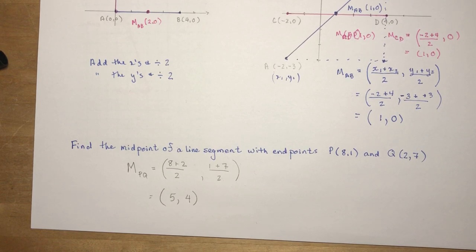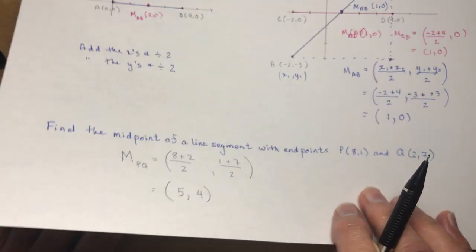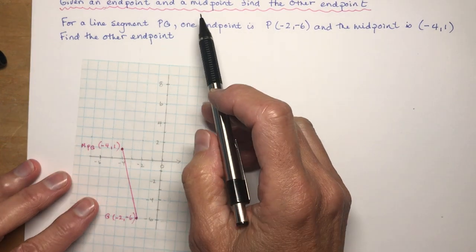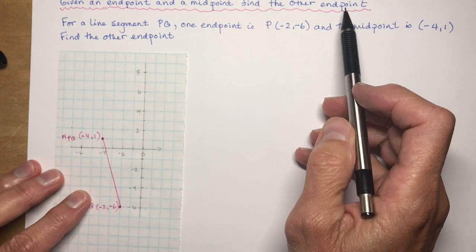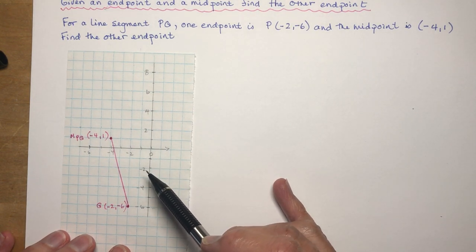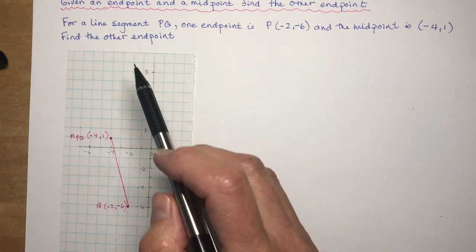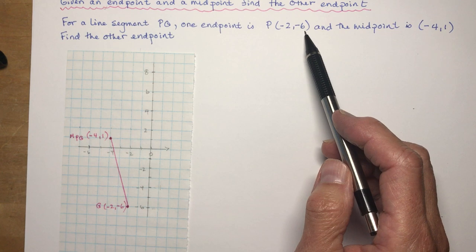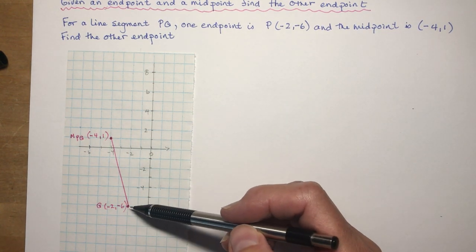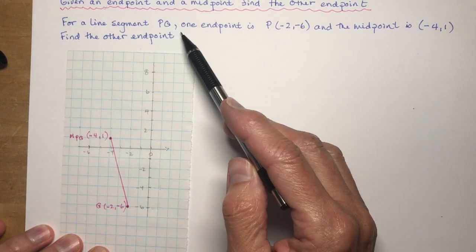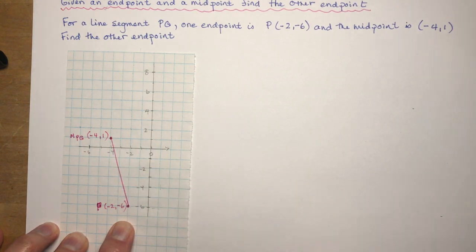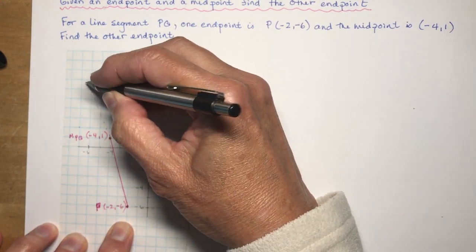Another question you'll be asked is: given the midpoint and one endpoint, find the other endpoint. For line segment PQ, one endpoint is P(−2, −6) and the midpoint is (−4, 1). I always suggest students sketch it on graph paper so they can visualize which direction the segment goes. Here's P plotted at (−2, −6), and the midpoint at (−4, 1).